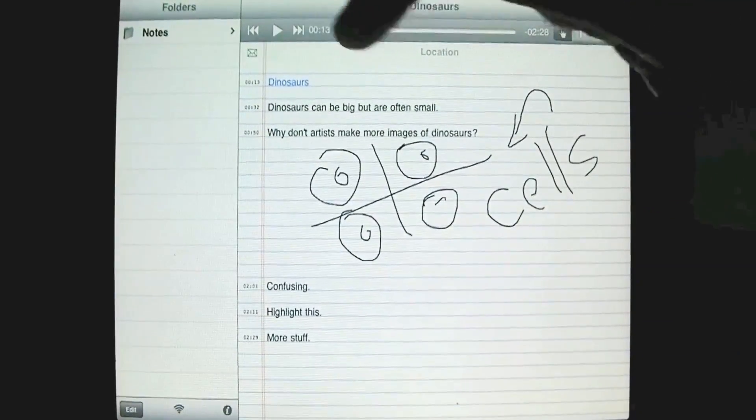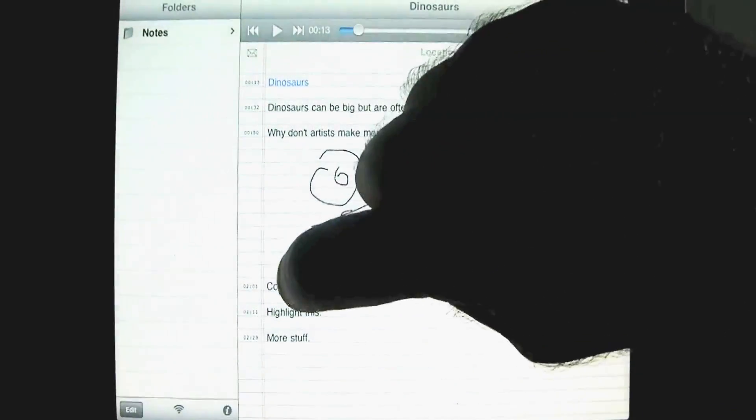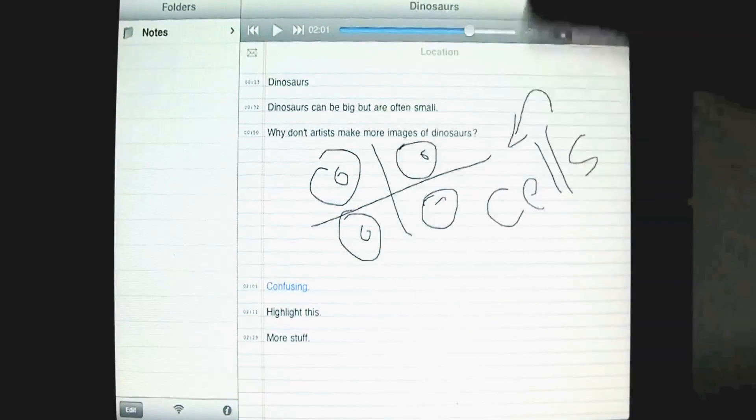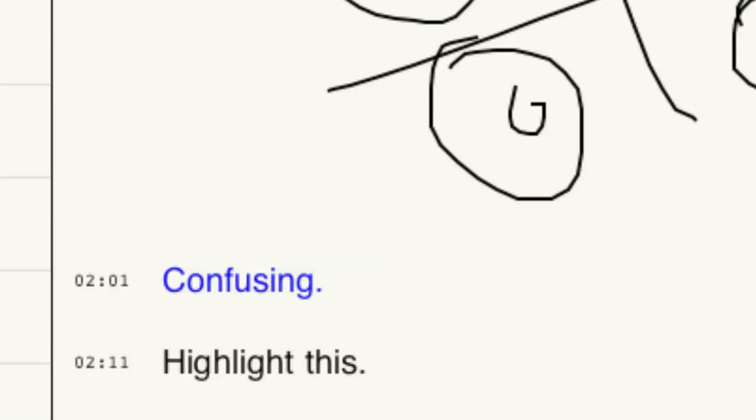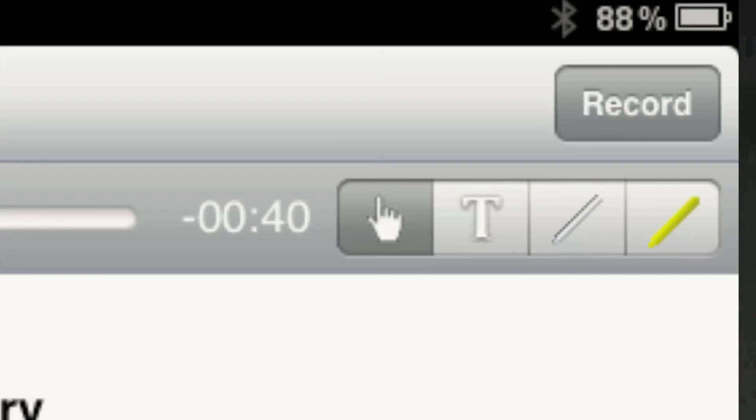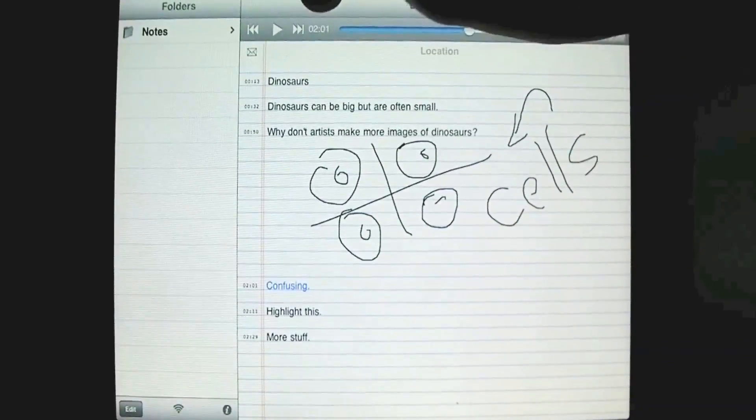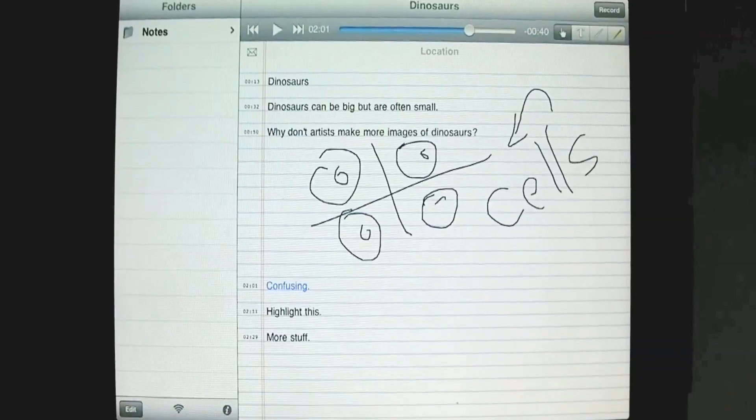So I can click on something and the audio will go to there. So we said there was a certain point where things were confusing down here. And it has the time there, right? So it's two minutes and one second. I started getting confused about a certain concept. So all I've done is typed the word confusing. And now with this little hand icon, which is the default icon in the playback mode, I just tap on it. And notice it's taken me to what? Two minutes and one second. Exactly where it starts getting confusing. And I've recorded the lecture.